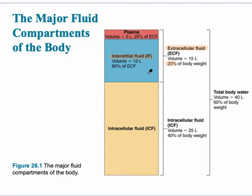Since it's between cells, we call it interstitial fluid. That makes up 80% of the extracellular fluid. The rest is the plasma, which is found in the blood vessel itself. So those two compartments — interstitial fluid and plasma — make up the extracellular fluid.